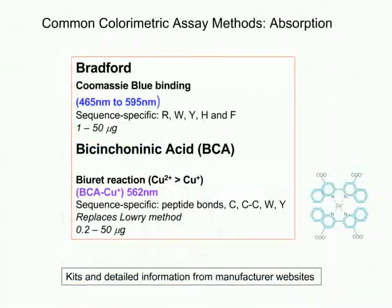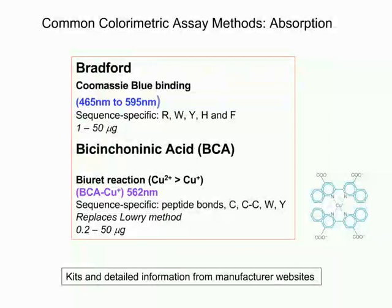Some of the common colorimetric methods that many people are most familiar with: the Bradford method is based on Coomassie blue binding to basic and hydrophobic groups, so there is some sequence specificity. The BCA method is based on the Biuret reaction, where copper is reduced and then forms complexes with the dye. The devil is in the detail—manufacturer websites provide lists of buffer components that are and are not compatible with these assays.